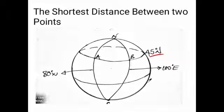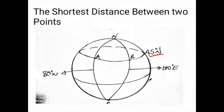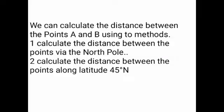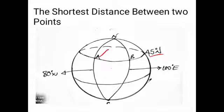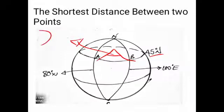So how can we calculate the shortest distance? Let's calculate the distance between A and B along the north pole, meaning from B we would move like that and then like that. This tells us that we are going along the longitude. So we are going to say our angular difference has been given as 90 degrees.